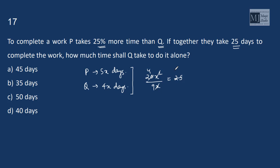That means x equals 45 by 4. How much time does Q take to do it alone? Q takes 4x days, 4 into 45 by 4. That is 45 days. Option A.